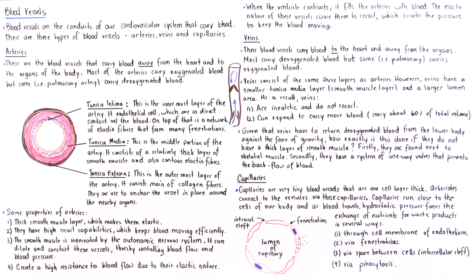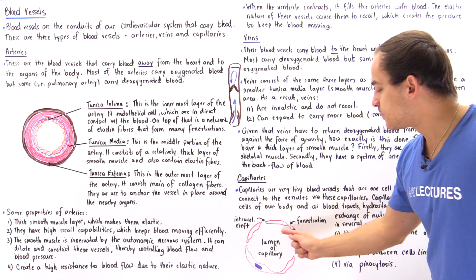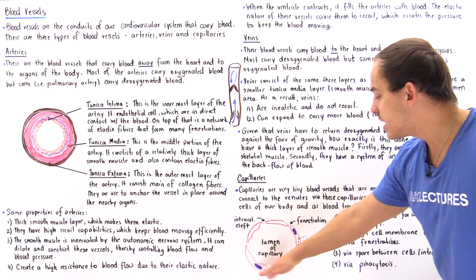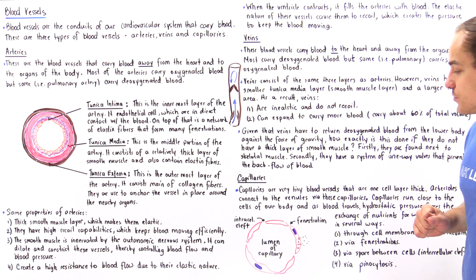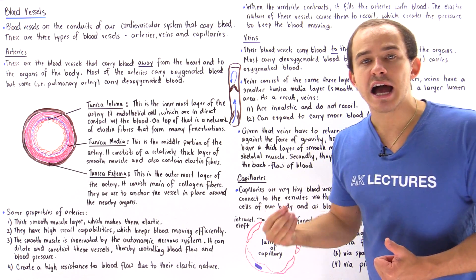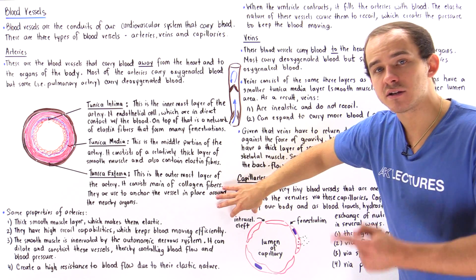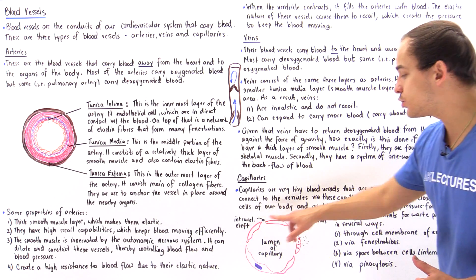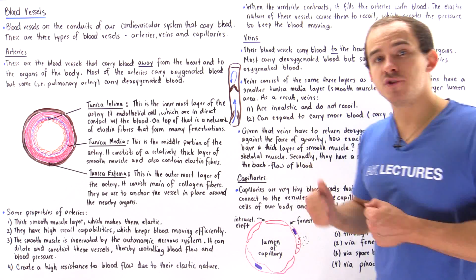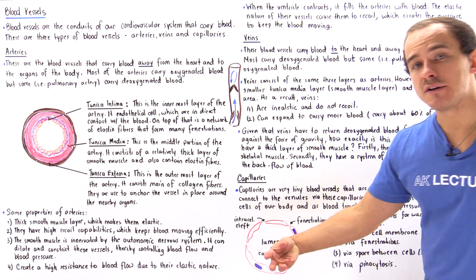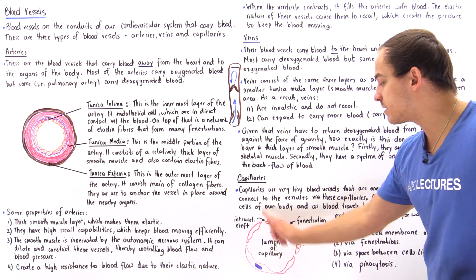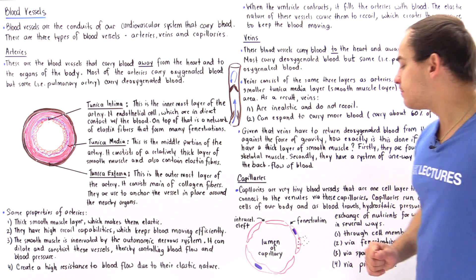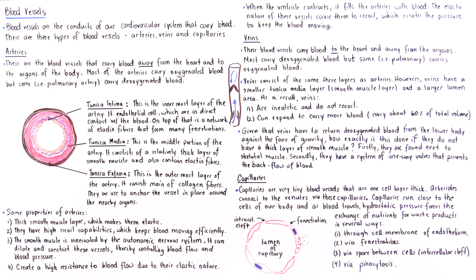Looking at a cross section of the capillary, we have the lumen and two endothelial cells forming the capillary wall. Between these cells there are two types of openings: a hole known as the intracellular cleft, and also a fenestration. These two openings allow the movement of nutrients from one side to the other. As blood flows, hydrostatic pressure expands these openings and allows movement of substances across the capillary wall. So the first method is via the fenestrations, and the second is via the intracellular cleft.